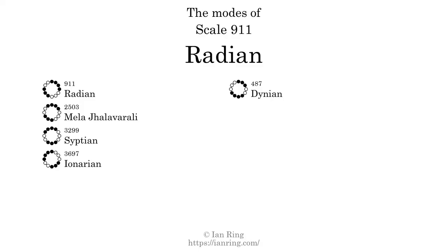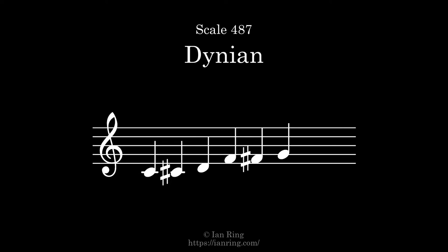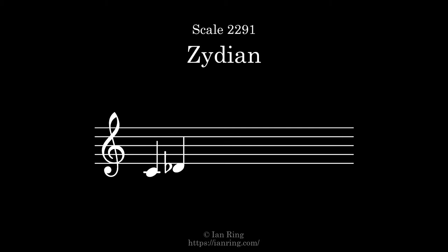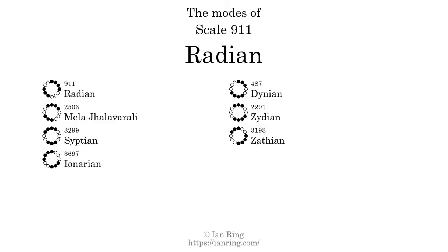The fifth mode is Scale 2291, also known as Ionarion. It sounds like this. The sixth mode is Scale 2291, also known as Zydeon. It sounds like this. The seventh and last mode is Scale 3193, also known as Zydeon. It sounds like this.